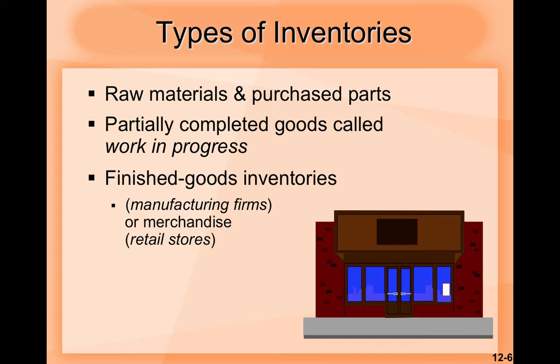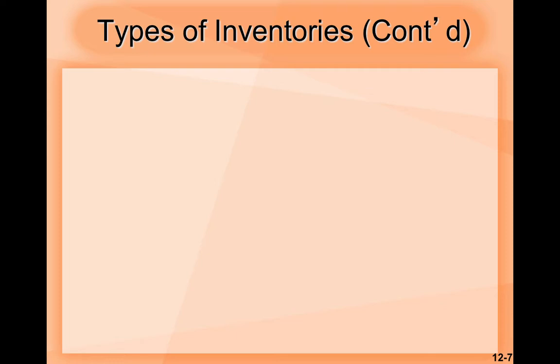The third type is finished goods inventories, used by manufacturing firms or merchandise retail stores. This type of inventory is used to store your final products. For example, the raw materials to make a computer would be the first type, the partially completed computer would be the second type, and the third type would be storage of those already completed computers.